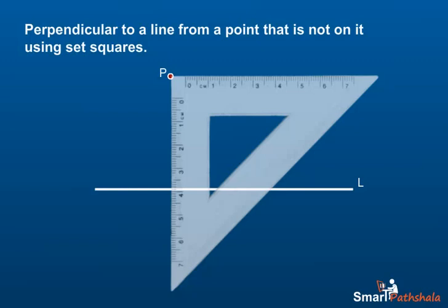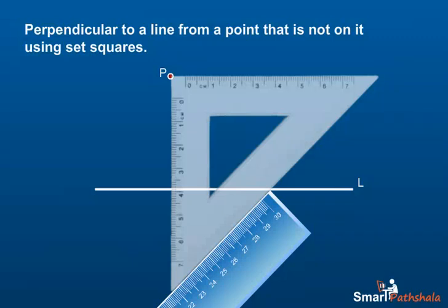Step 3: Place a ruler along the hypotenuse side of the set square. Step 4: Hold the set square firmly. Slide the set square along the ruler till the point P touches the other arm of the set square.